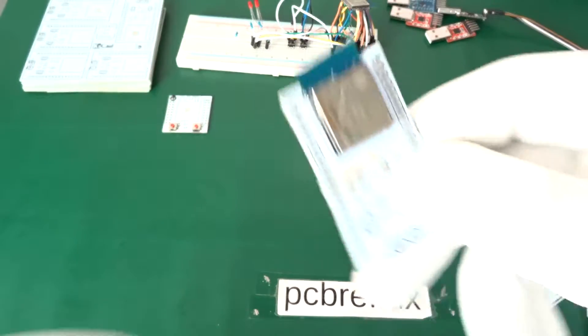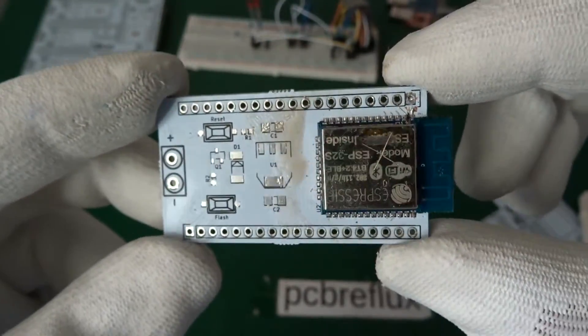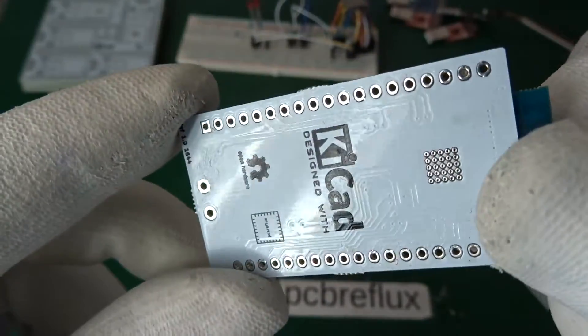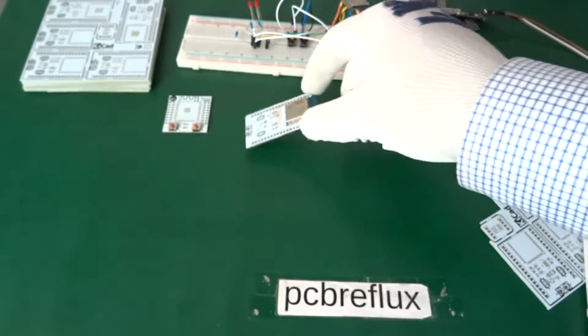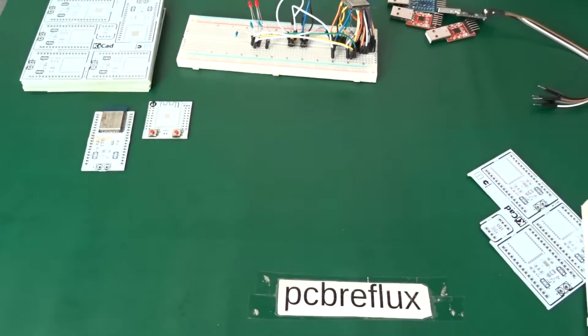So here we have an example for a ready soldered module without the pin headers. But unfortunately I've destroyed this module with my heat gun, so it's not worth soldering any pin headers around the corner.